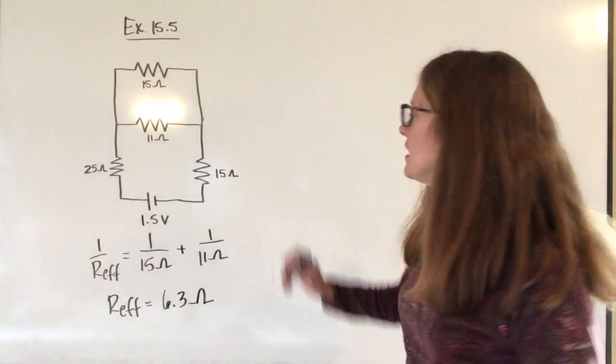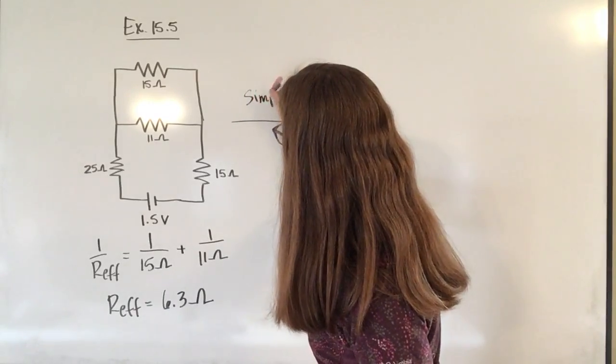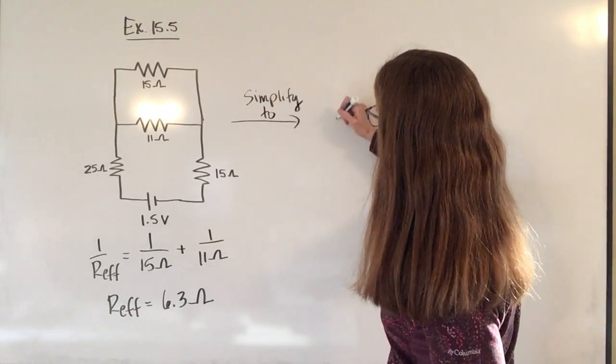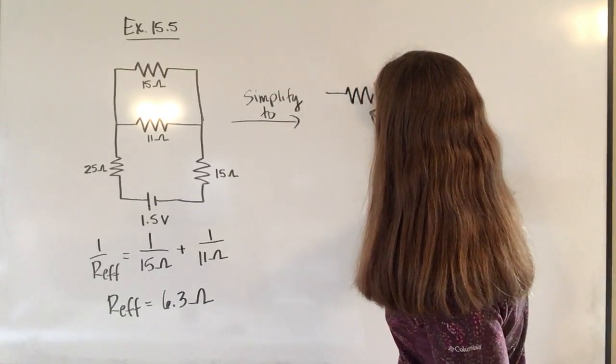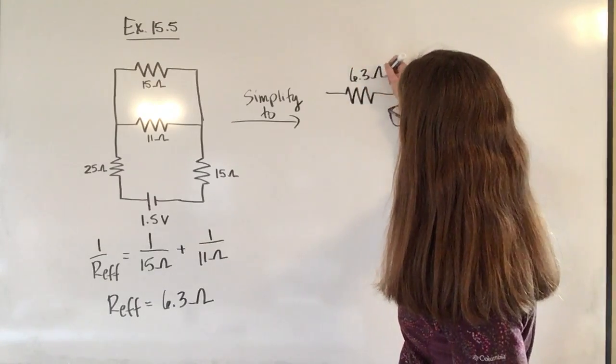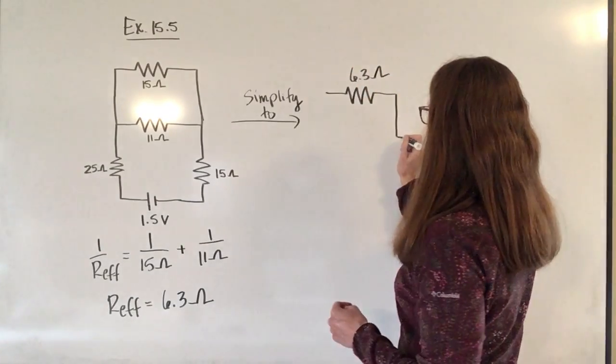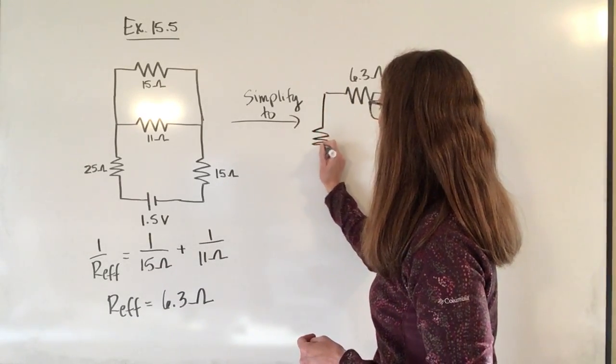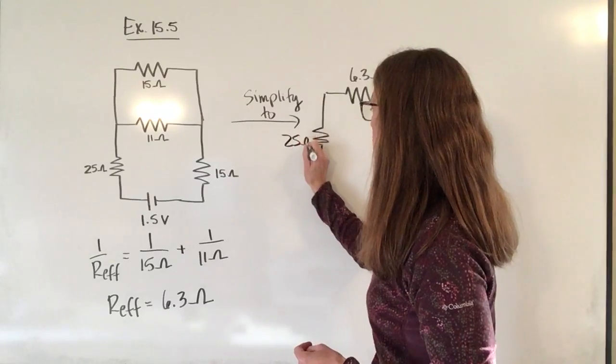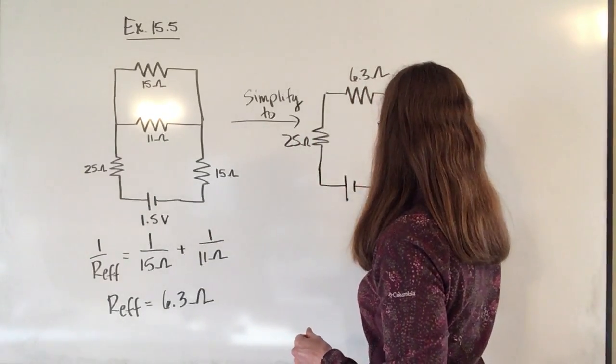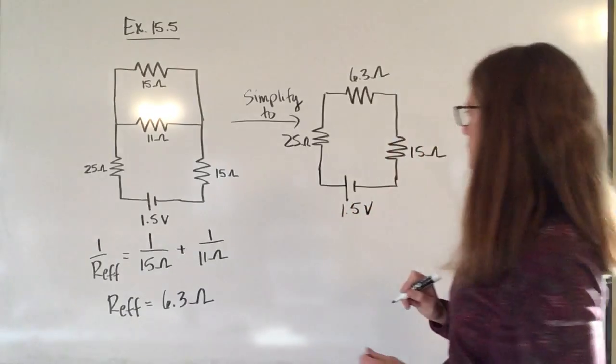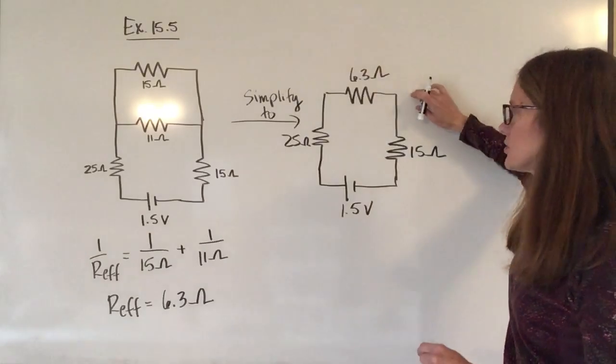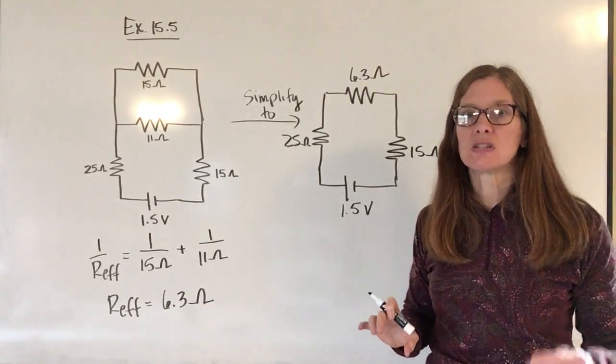So what that tells me then is I can actually take this circuit and I can simplify it to a circuit that looks like this. So I'm going to have these two that are going to be 6.3 ohms and then down here since everything has to go through this current or through this resistor, this one is 15 ohms and this one is 25 ohms, which is this one over here. And then I have my power source down here, 1.5 volts. Okay, so first thing again that you're going to do is take any resistors that are in parallel and simplify them so that all that you have left is a series of series resistors.